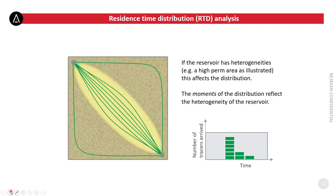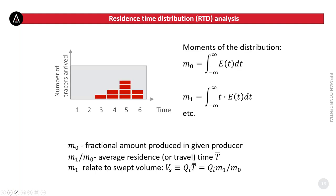Looking at the details of the distribution, we can quantify what are known as the moments. The zero-order moment (M0) is the area under the curve — the integral over all times — and corresponds to the total mass arriving at a given producer, reflecting the importance of the connection. The first-order moment (M1) is time multiplied by the distribution and integrated, closely related to the average travel time. With the average time and the injection rates, we essentially know the swept volume: volume swept equals injection rate times average time.